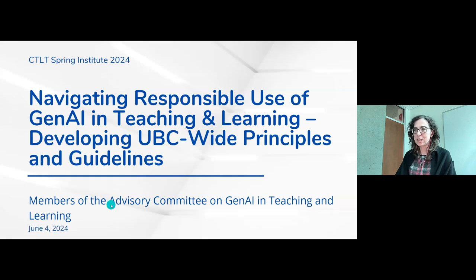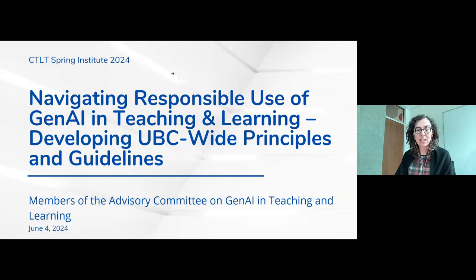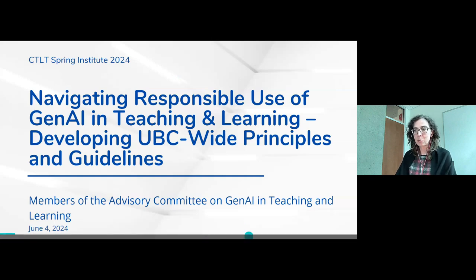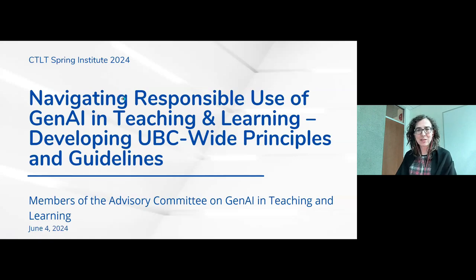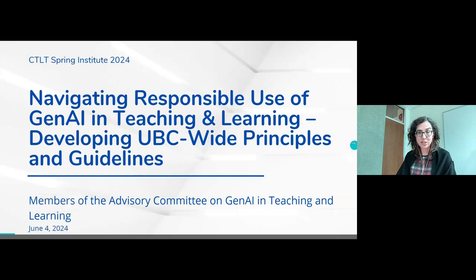Others of you may be joining from the territories of the Musqueam, Squamish, and Tsleil-Waututh peoples, perhaps in the lower mainland, elsewhere in BC. Some of you may be joining us from UBC Okanagan, which is located on the Syilx Okanagan Nation territories, unceded and ancestral territories. As I give the land acknowledgement today, I'm thinking in part about Indigenous data sovereignty principles and how those intersect with generative AI, which this committee has been talking about quite extensively.